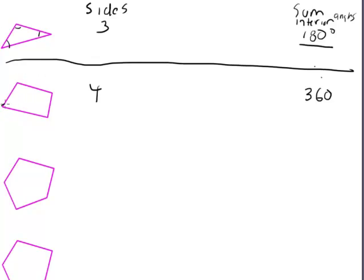Let's look at how we figure that out from triangles. We can draw a line straight through the middle of a quadrilateral. We have two triangles, and we know each one has 180 degrees. 180 plus 180 is 360. So we can figure out the sum of all the inside angles by thinking of the shape as triangles. A quadrilateral, or four-sided shape, can be thought of as two triangles — 180 plus 180 — giving us a sum of interior angles of 360 degrees.